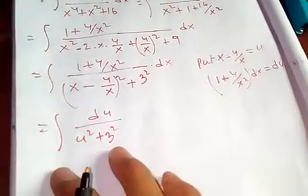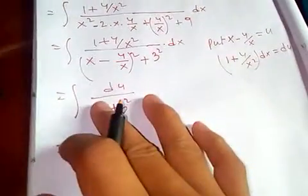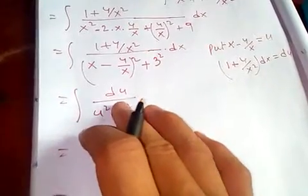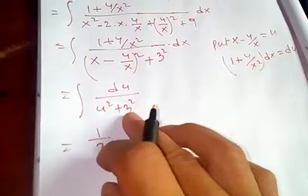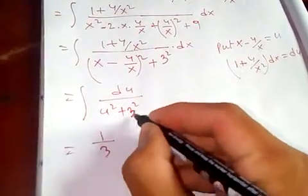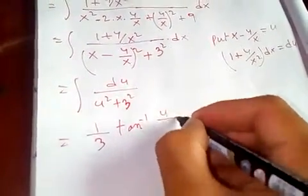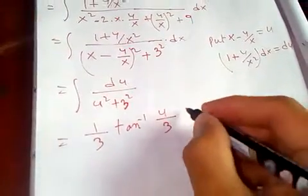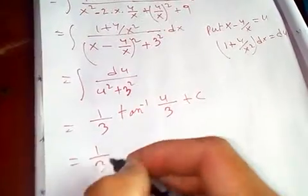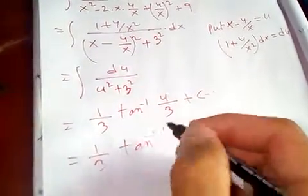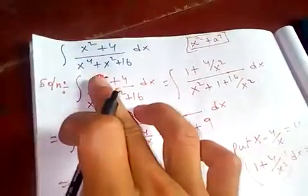This is now in the form of our special integral. Using the formula ∫ du/(u² + a²) = (1/a) arctan(u/a) + C, where a = 3, we get (1/3) arctan(u/3) + C. Substituting back in terms of x, since u = x - 4/x, we get (1/3) arctan((x - 4/x)/3) + C.